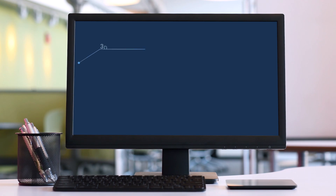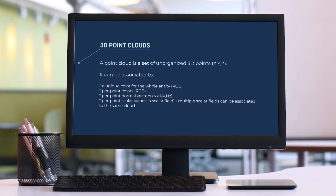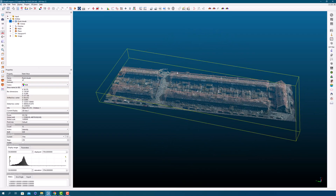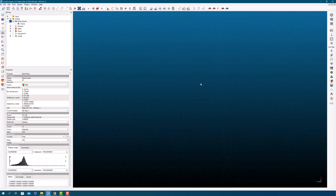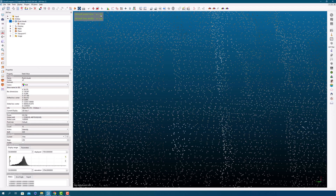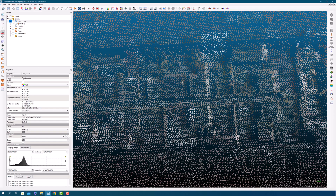The first entity we will be discussing is the 3D point cloud. A point cloud is a collection of unorganized 3D points, with each point having its own X, Y, and Z coordinates. In addition to this positional data, a point cloud can also be associated with different types of attributes. For example, we can assign a unique color to the entire entity, or give each point a specific color. We can also add normal vectors to each point to define the surface orientation, and associate scalar values with each point to represent physical properties such as reflectivity, temperature, or intensity.